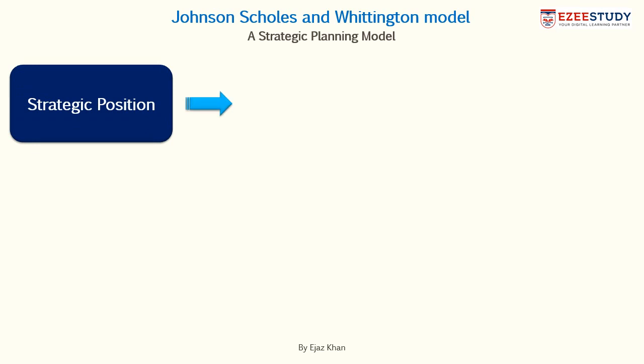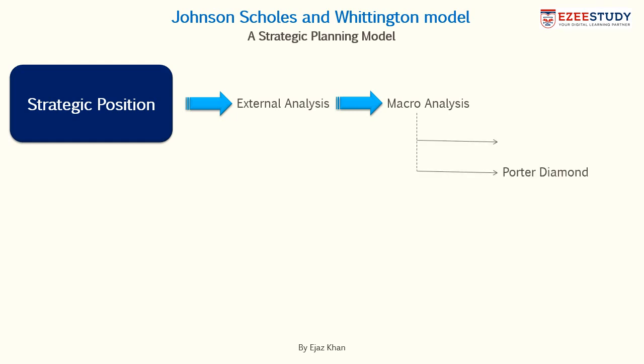So the first step is analyzing the strategic position of the company. And when we are analyzing it from an external point of view, we've got two models for analyzing the macro level environment. One is the PEST analysis, which we have already discussed in our previous video, and the other is the Porter Diamond, which we are going to discuss in this video.